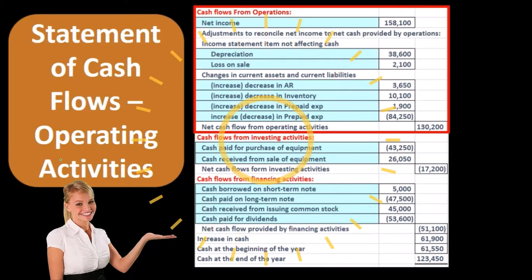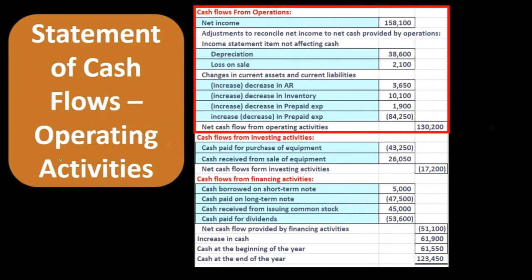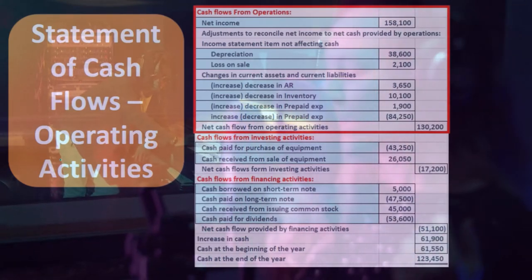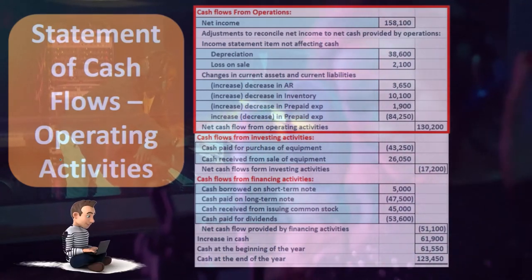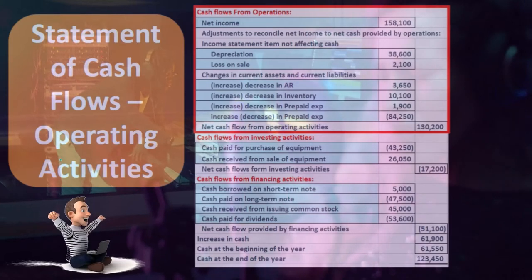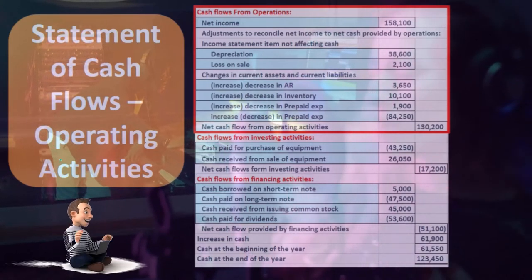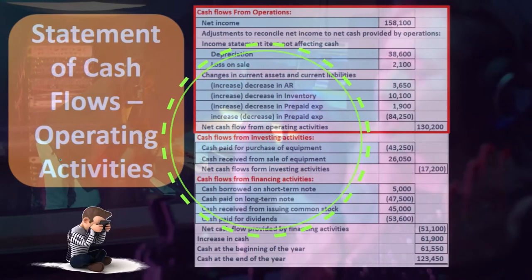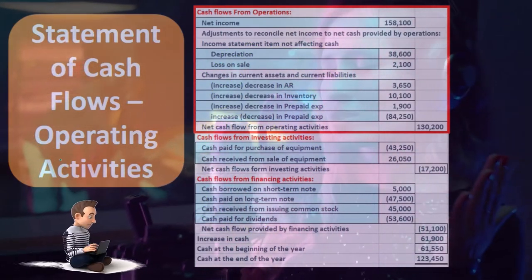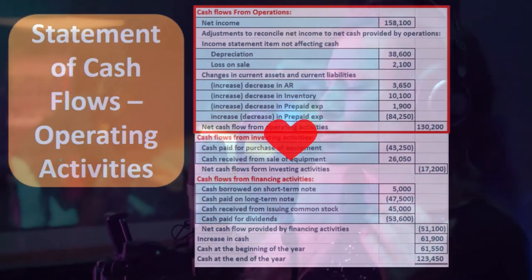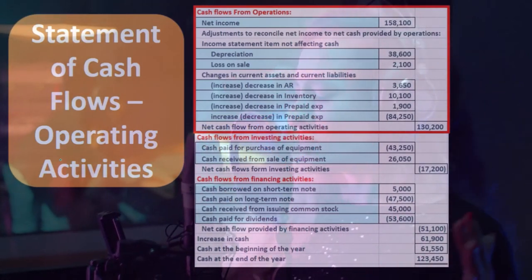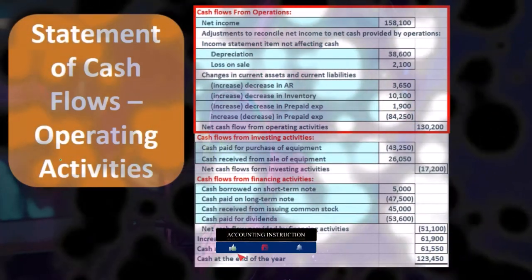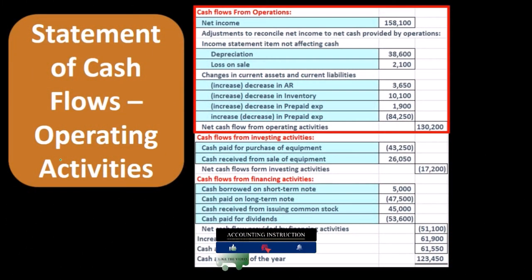The income statement on an accrual basis is generally going to be reporting those operating activities in accordance with the revenue recognition principle and the matching principle. We could directly change those from the revenue recognition principle and the matching principle to a cash basis — basically taking sales and converting that revenue recognition to cash receipts, taking expenses and converting that matching principle to cash payments, to arrive at net cash flows from operating activities.